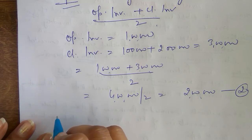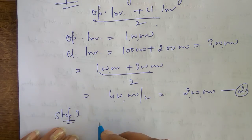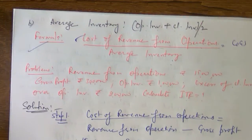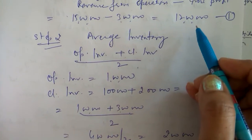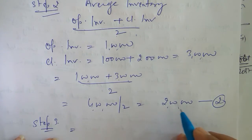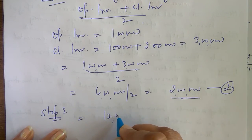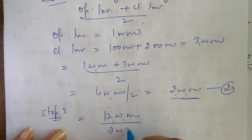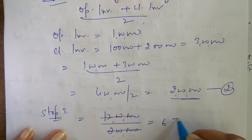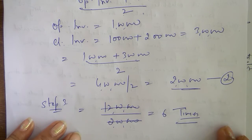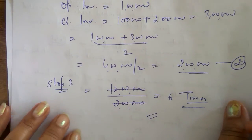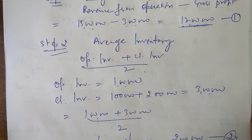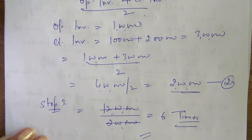Step 3: Put values in the formula. Cost of revenue from operations divided by average inventory = ₹12 lakh divided by ₹2 lakh = 6. Since the expression is in times, ITR = 6 times. This is the first ratio we have calculated.